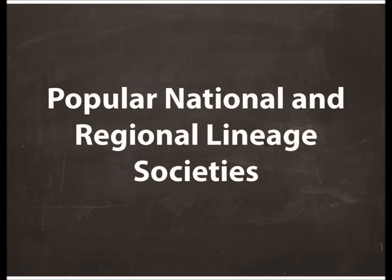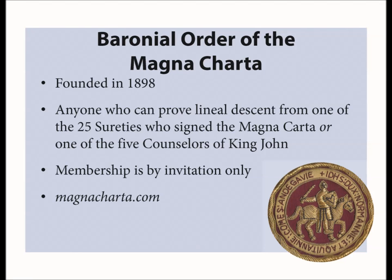I will discuss some of the popular national and regional lineage societies. First is the Baronial Order of the Magna Carta, which was founded in 1898 to promote and support those principles set forth in the Magna Carta. This society is for any person who can prove descent from one or more of the 25 sureties who signed the Magna Carta on 15 June 1215, or from one of the five counselors of King John. This society is by invitation only, and applications are approved by the genealogist of the Baronial Order of the Magna Carta.